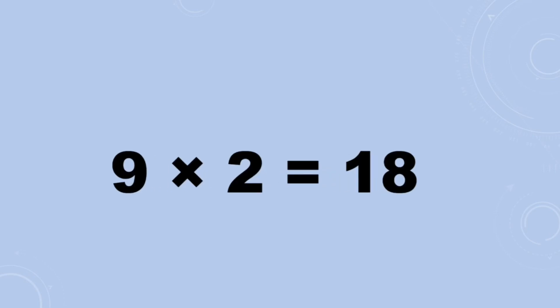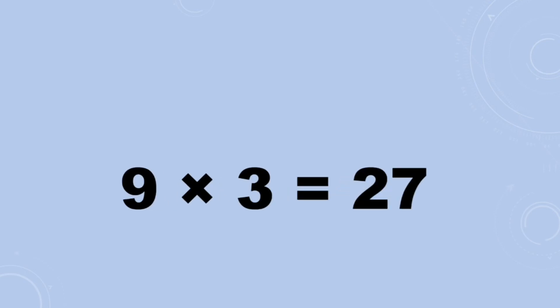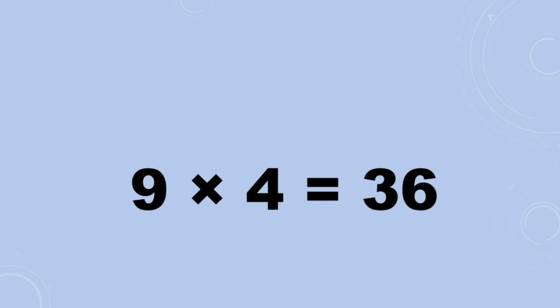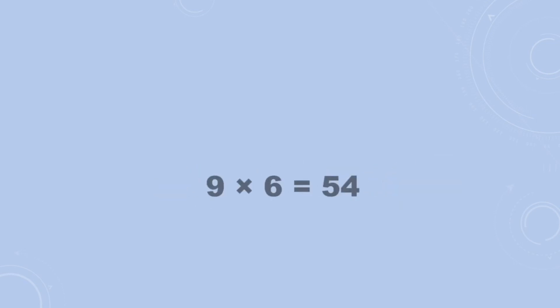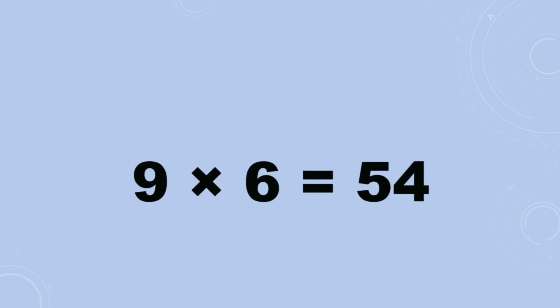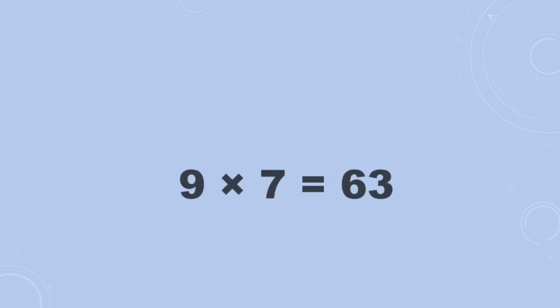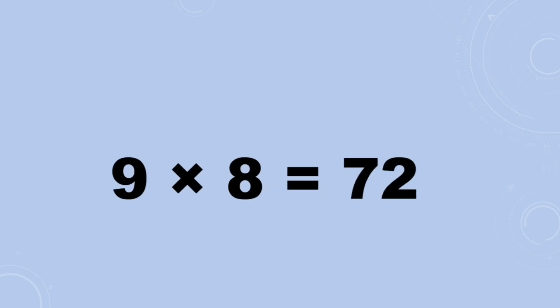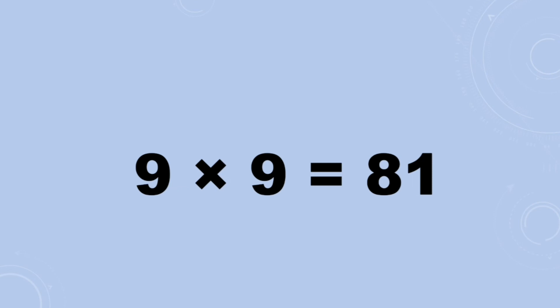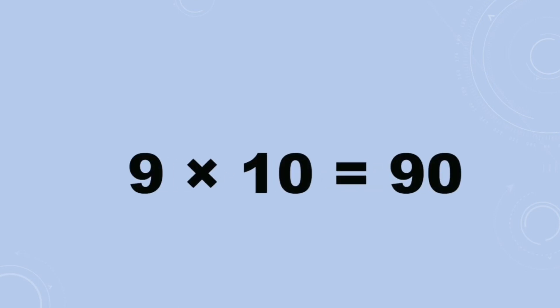Nine twos are eighteen, nine threes are twenty-seven, nine fours are thirty-six, nine fives are forty-five, nine sixes are fifty-four, nine sevens are sixty-three, nine eights are seventy-two, nine nines are eighty-one, nine tens are ninety.